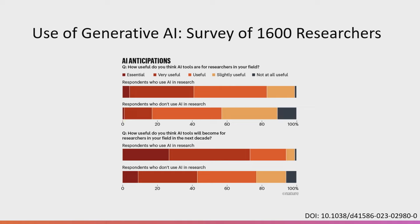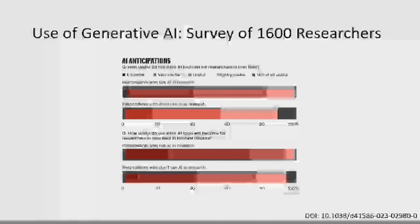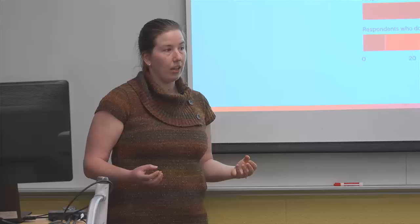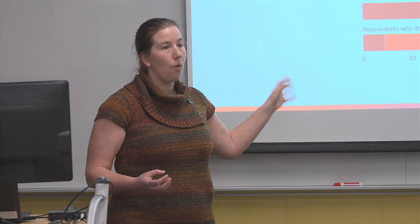When expanded to how useful AI tools would be in the coming decade, these numbers go up even more — over 90% of researchers who use AI expect these tools will be useful in the field. If these tools are going to play such an important role, this is something we need to be thinking about teaching our students. It's not something we can ignore; our students need to know the pros and cons of these methods.